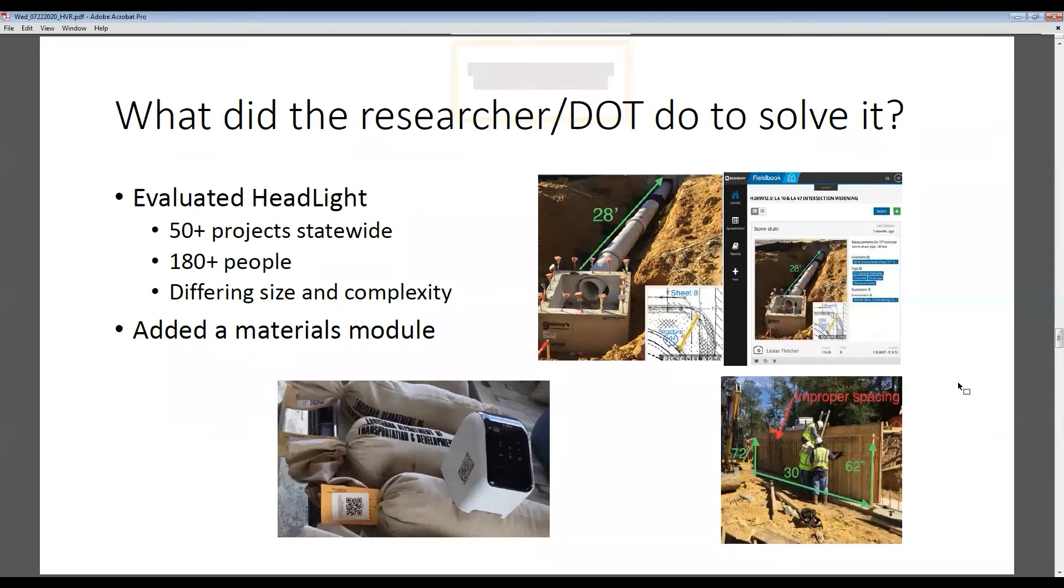You can see some of the different types of observations we have. If you look at the first figure on the right with the pipe and the box cover, we extended and widened the radius for this project. We were able to use pic collage and show the exact location. All of these pictures and videos attached in this field book program from Headlight are geo-located with latitude, longitude, and elevation, and they're time and date stamped. All of that is now part of that construction documentation.